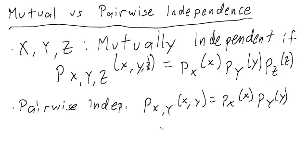And similarly for yz and xz. So this is saying if I know anyone, it doesn't tell me anything about any of the others. But this is not the same as mutual independence. It's not as strong. And let's talk about an example of why.